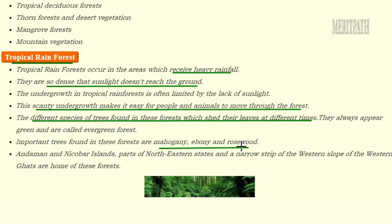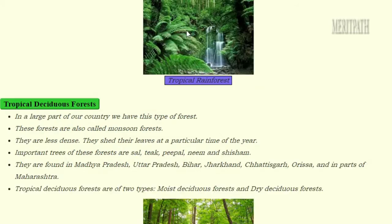Important trees found in tropical rainforests are Mahogany, Ebony, and Rosewood. These tropical rainforests are mostly found in the Andaman and Nicobar Islands, the northeastern states, and the western slopes of the Western Ghats. In this image, you can see a tropical rainforest where there is a large amount of forest cover.